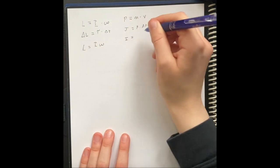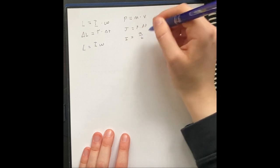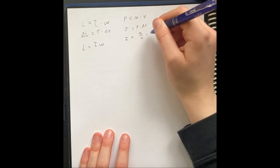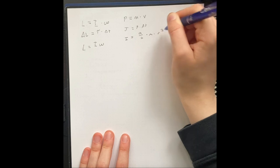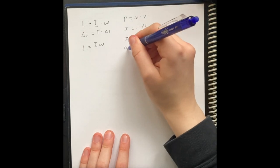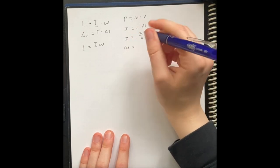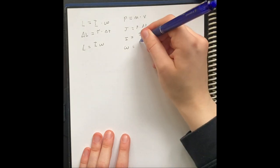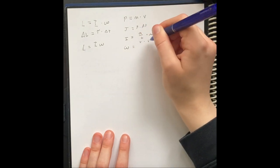I is always going to be equal to some fraction times mass times radius squared. Angular velocity is going to be equal to regular velocity times sine of theta.